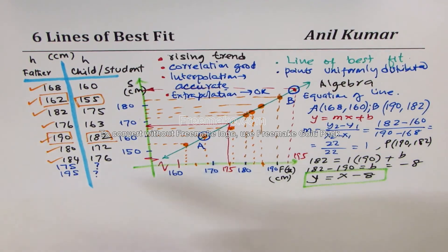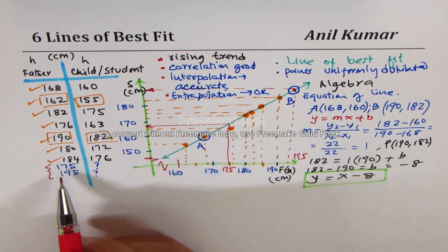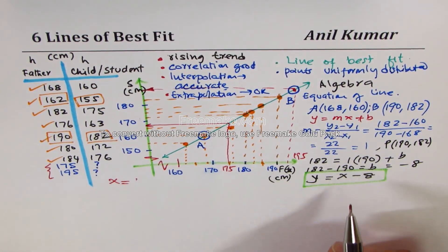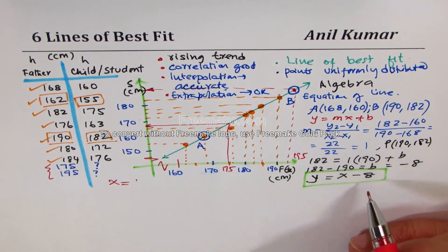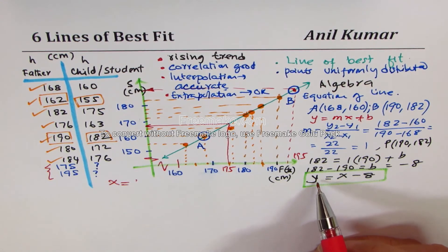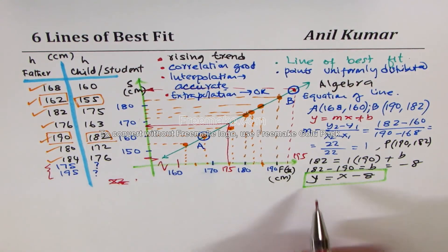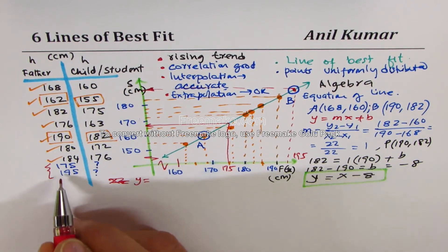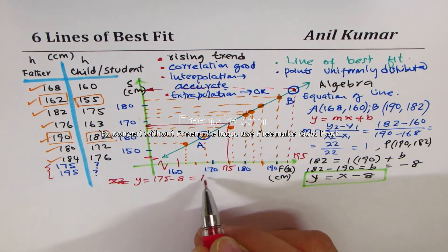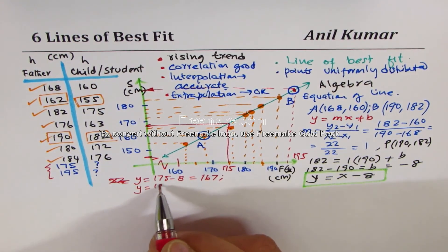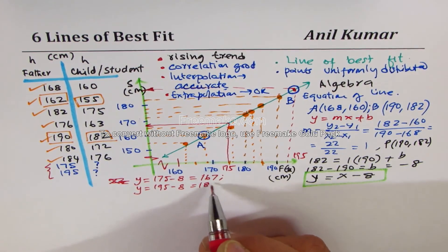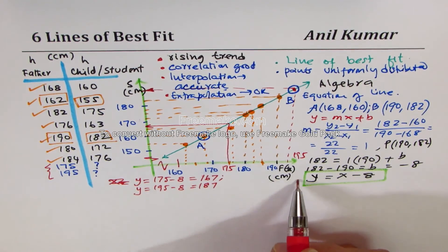So the equation of the line is Y = X − 8. Now we can use this to find heights. For a father's height of 175: Y = 175 − 8 = 167. For a father's height of 195: Y = 195 − 8 = 187. So those are the two answers we get from the equation — 167 cm and 187 cm for student heights corresponding to father heights of 175 and 195 respectively.